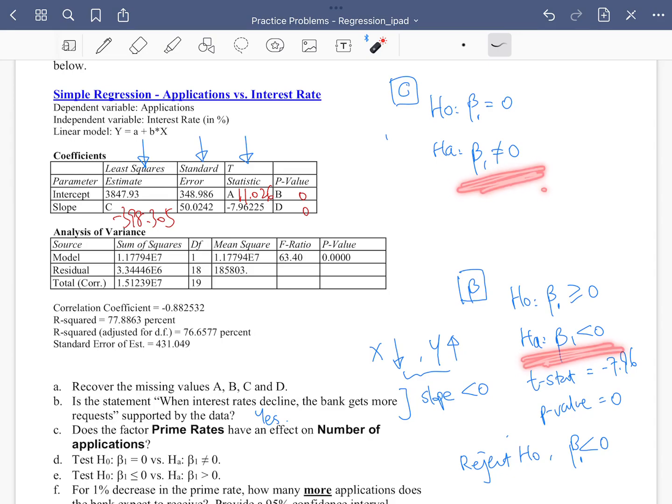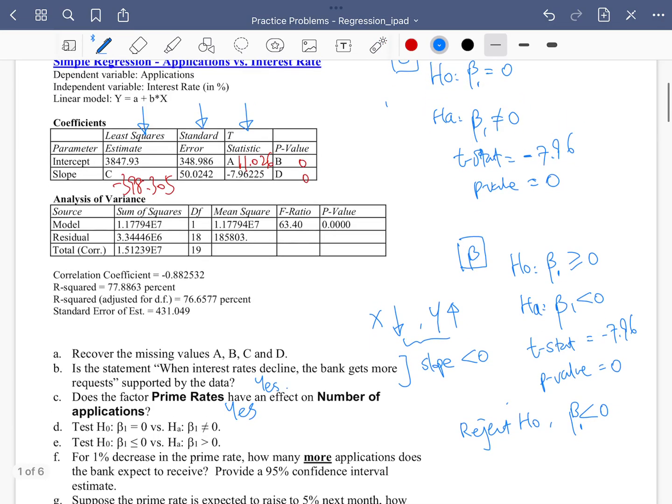But everything should be the same. The test statistic, for example, the t-stat again is negative 7.96. P-value is 0. We got 0 directly from here. We don't have to divide by 2. The p-value is 0. We rejected the null and we think the alternative is correct. So yes, there's an effect.